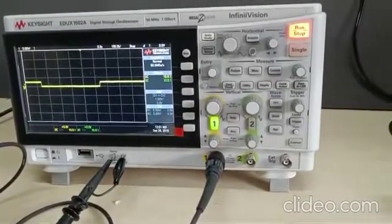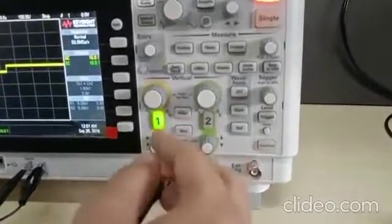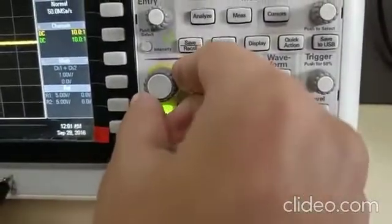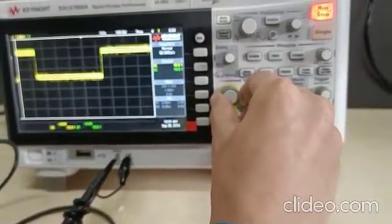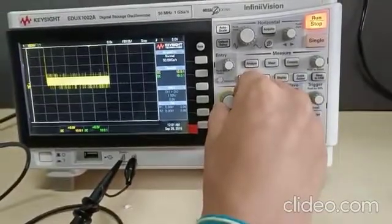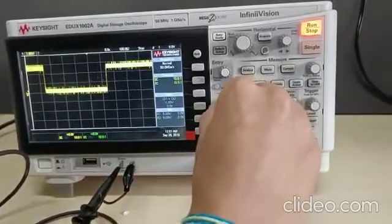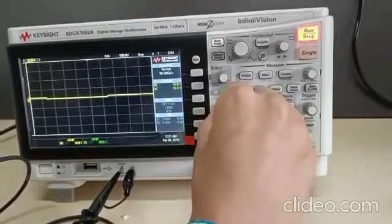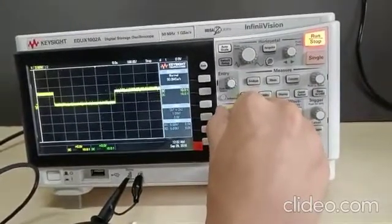Now we will move on to voltage per division knob. The voltage per division knob is above the channel selection. By rotating it clockwise, the voltage per division decreases. And by moving it anti-clockwise, the voltage per division increases.